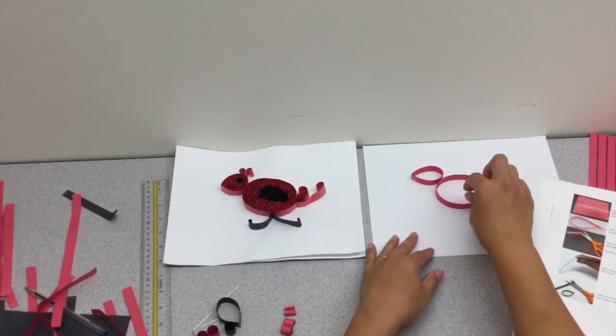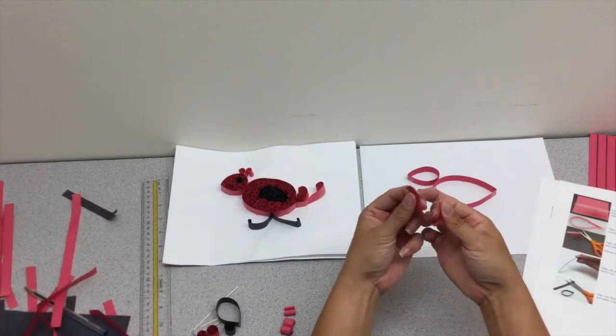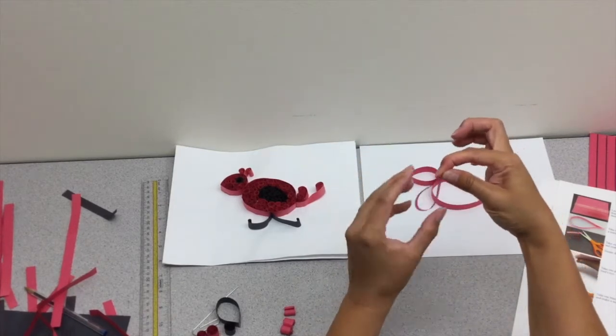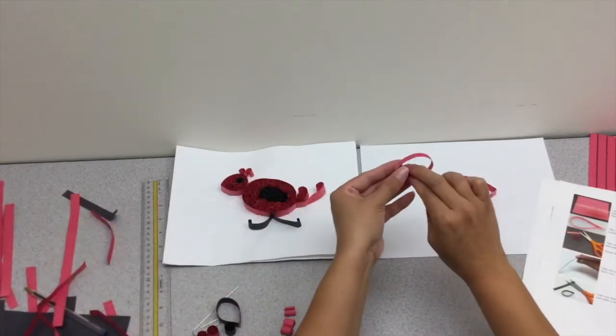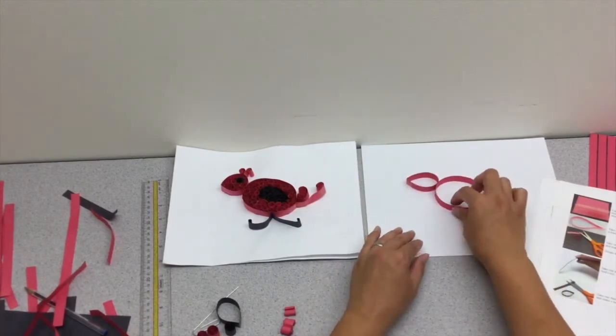The second step is to take half of a strip, recreate that teardrop shape, and tape it on the end. That creates the head of the bird. Those are the two main shapes you're going to be filling in.